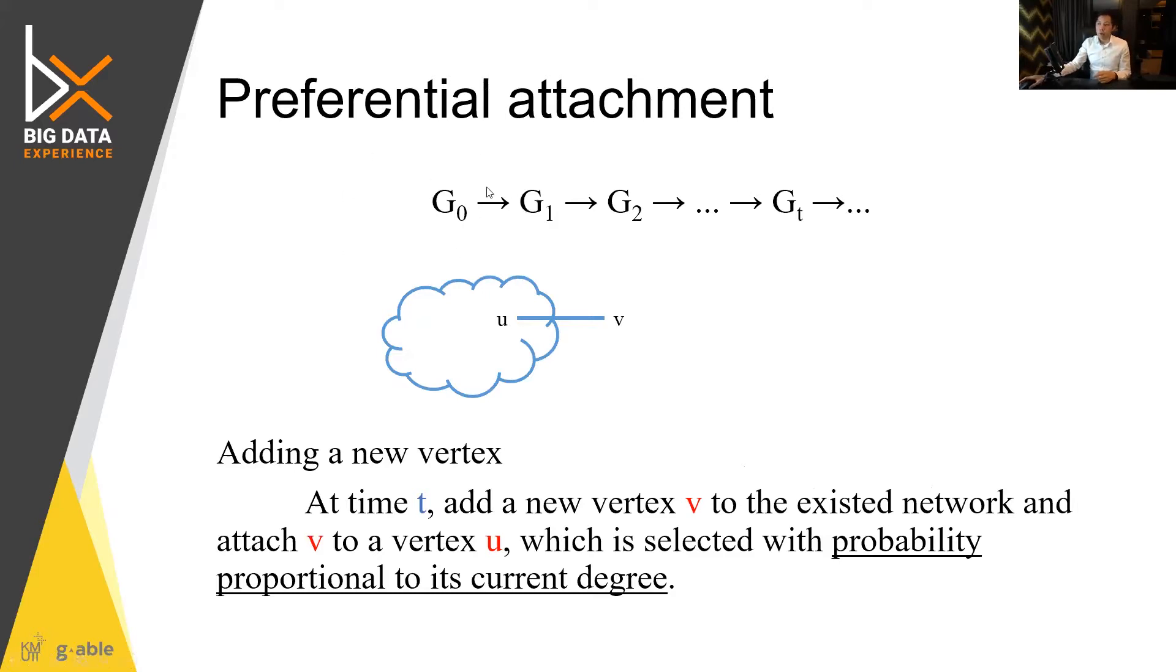That is, network would evolve from time G0 to G1 to G2 and then to Gt. And we want new vertex adding to existing node.